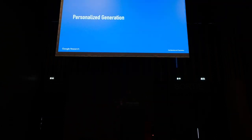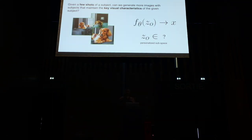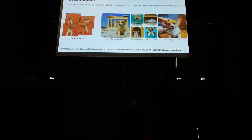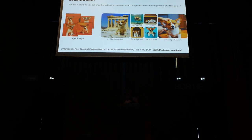For the second branch — personalized generation — the question is how I can generate my own dog. I don't want to describe my dog with words, I want to provide a few reference images and find a personalized subspace within this model. This is what DreamBooth enables. With DreamBooth, you can take a few images of your dog and embed them into the output domain of the model by fine-tuning, and then generate your own dog in different contexts, swimming in the ocean, getting a haircut, put in a bucket. It's been a year since we published DreamBooth, and I'm still super excited every time I see these results.